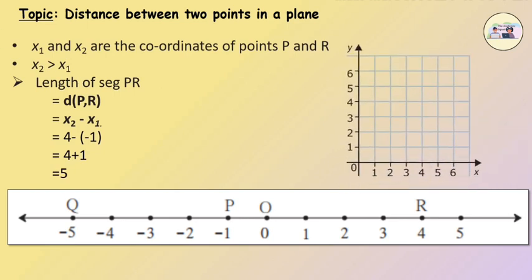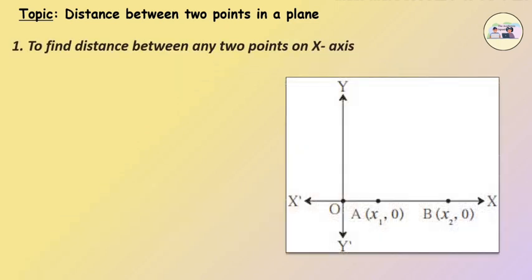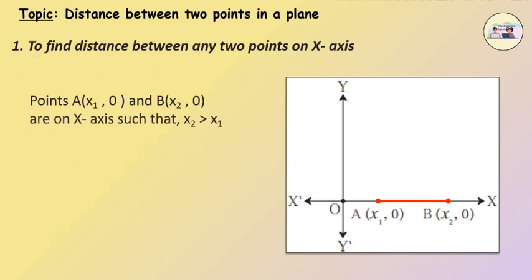Using the same concept, we can find the distance between two points on the same axis in the xy plane. To find the distance between any two points on the x-axis: in the given figure, points A and B are on the x-axis such that x2 is greater than x1. Therefore, the distance of AB is equal to x2 minus x1.